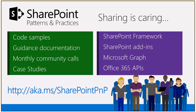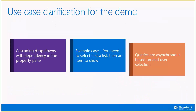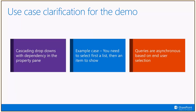Now let's move into today's actual topic, which was cascading drop-downs in the property pane. This is more of a scenario or a case that we want to show in practice from a coding perspective. Essentially what we're going to show is that you have cascading drop-downs with a dependency in the property pane — you have one drop-down, you click and select something from there, and that will then asynchronously download the other set of data in the second drop-down.